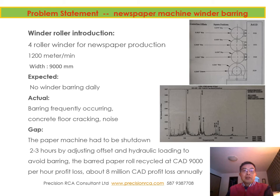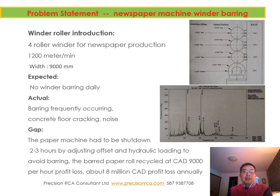Let's look at the winding barring problem system first. The case we study here is for the newspaper industry and has four winder rollers, as you can see from the top. The design speed is 1,200 meters per minute, so it's a very fast newspaper machine, and the width of the roll is about nine meters. We definitely don't want any barring happening — we have to recycle the newspaper again and it cuts down a lot of value.